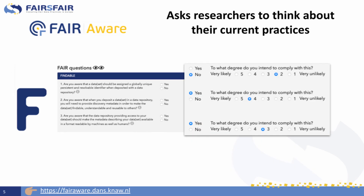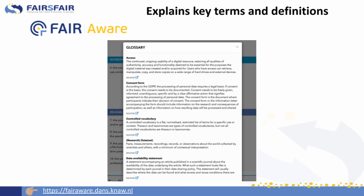The tool also asks researchers to reflect on their current practices in terms of FAIR. On a scale of 1 to 5, from very likely to very unlikely, they assess themselves to what extent they intend to comply with a particular FAIR practice. The tool is also equipped with a practical glossary, which includes all relevant terms and definitions used throughout the tool.